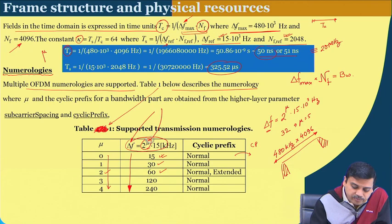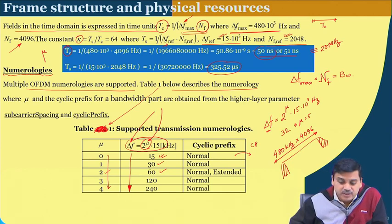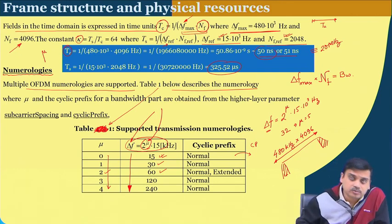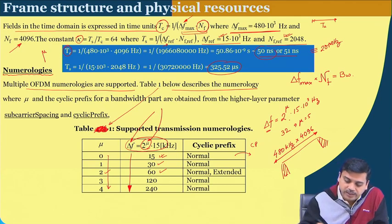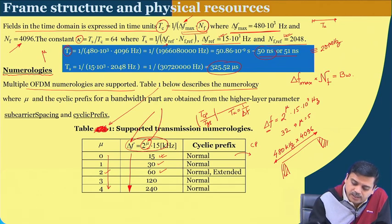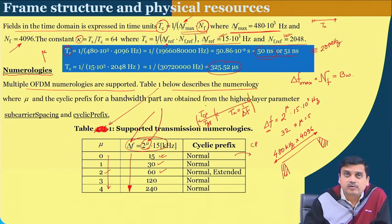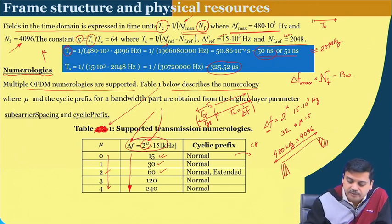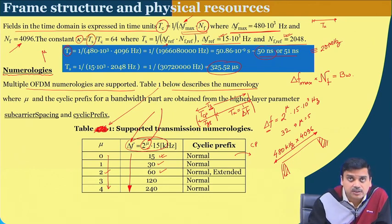This configuration of OFDM for different subcarrier spacings is termed numerology in OFDM. The cyclic prefix duration is also coupled with mu, as we will see shortly. Through the use of mu, one can describe the structure of the OFDM symbol. The total symbol duration — T_S indicating OFDM symbol duration — can change based on the choice of parameter.